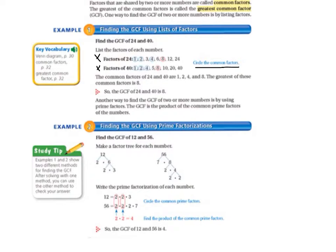The book has us circling the common factors. The common factors of 24 and 40 are 1, 2, 4, and 8. And the greatest of these common factors is 8. So the GCF of 24 and 40 is 8.